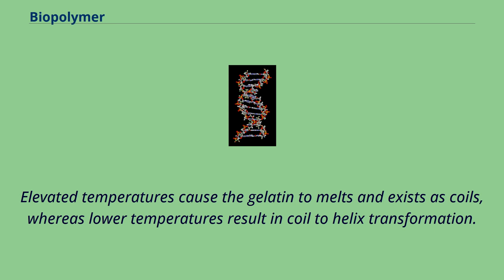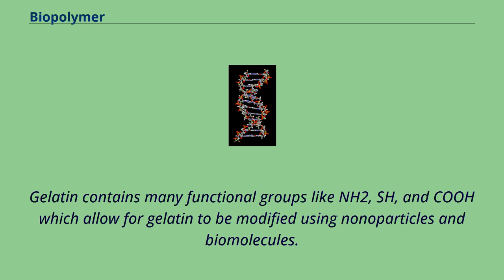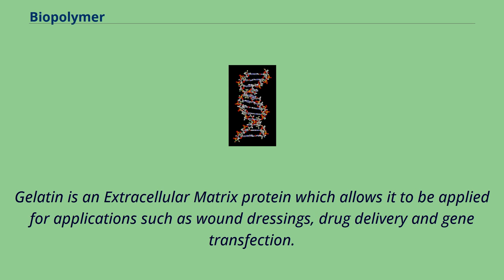Elevated temperatures cause the gelatin to melt and exist as coils, whereas lower temperatures result in coil-to-helix transformation. Gelatin contains many functional groups like NH2, SH, and COOH, which allow for gelatin to be modified using nanoparticles and biomolecules. Gelatin is an extracellular matrix protein which allows it to be applied for applications such as wound dressings, drug delivery, and gene transfection.